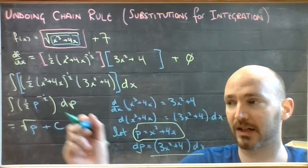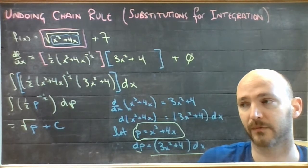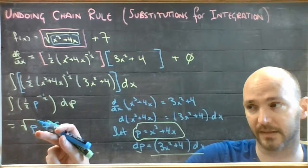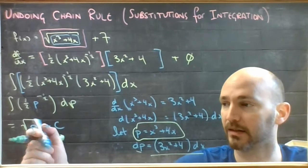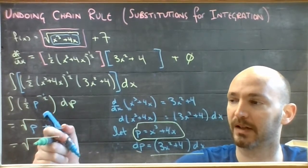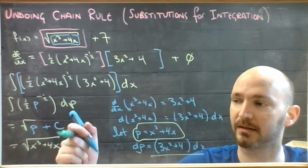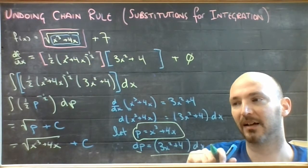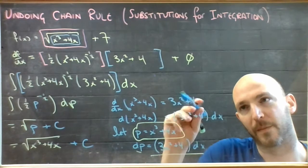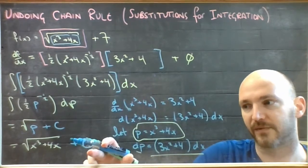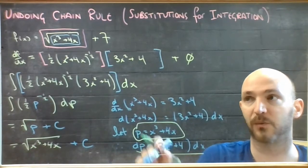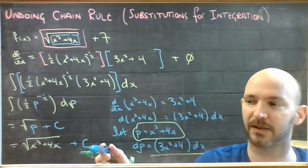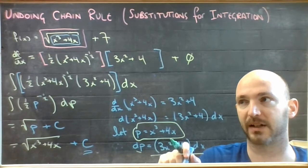Add any constant at the back. To finish, all I have to do is plug p equals x cubed plus 4x back in, giving me the square root of x cubed plus 4x plus c. That's the answer to this integral, which is good because that's what we started with. Notice that the plus 7 has been lost — we'd need a specific context to the question in order to regain that 7 specifically, but I've acknowledged there's some constant back there.